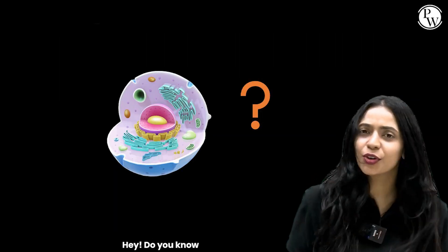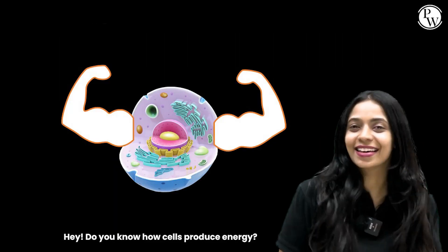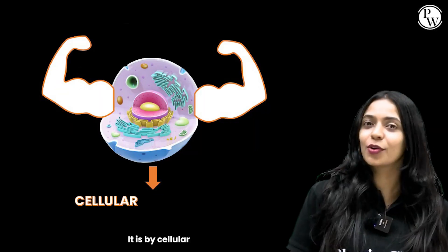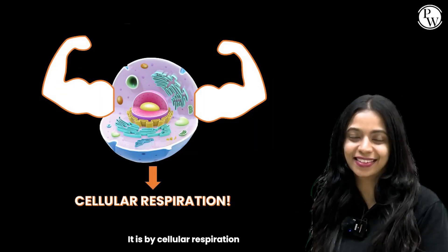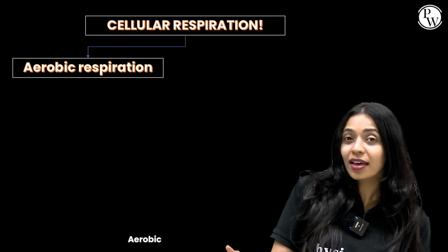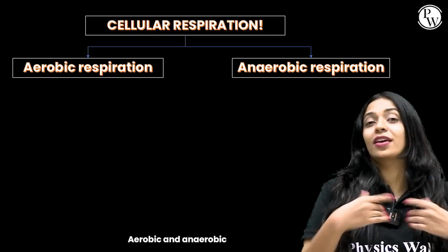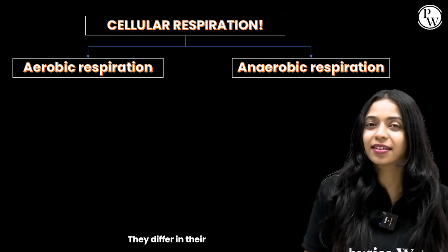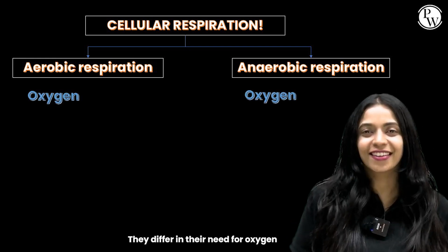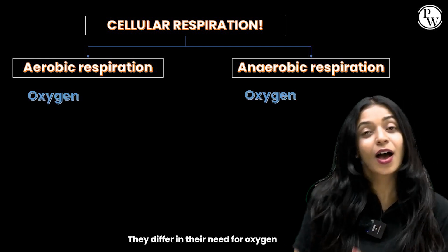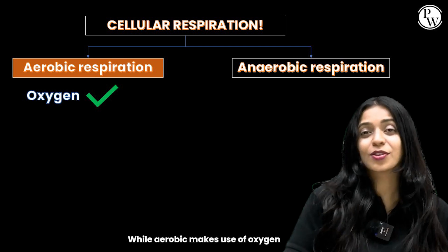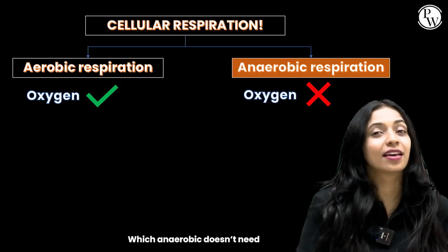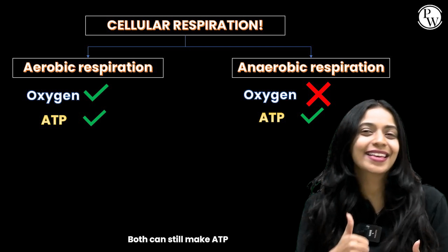Hey, do you know how cells produce energy? It is by cellular respiration. Aerobic and anaerobic are its types. They differ in the need for oxygen. While aerobic makes use of oxygen, which anaerobic doesn't need, both can still make ATP.